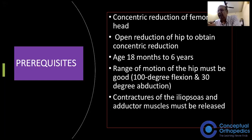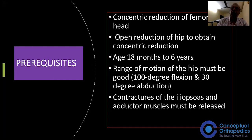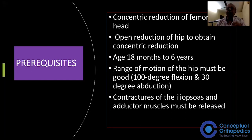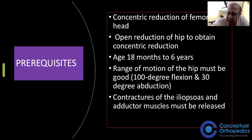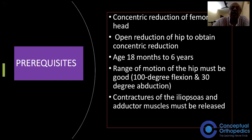The age group is 18 months to 6 years, though it can be extended up to about 8 to 10 years as the pubic symphysis may still be flexible. There should be adequate movement of the hip — around 100 degrees of flexion or 30 degrees of abduction. Contracture of the iliopsoas and adductor muscles must be released.